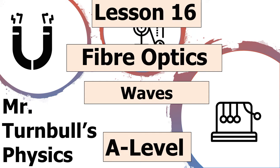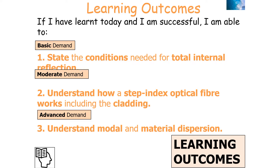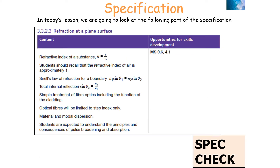In today's lesson, we're going to be looking at how fibre optics work. By the end, we should be able to state the conditions needed for total internal reflection, understand how a step index optical fibre works including the cladding, and understand modal and material dispersion, which is covered in AQA A-level physics specification 3.3.2.3: refraction at a plane surface.